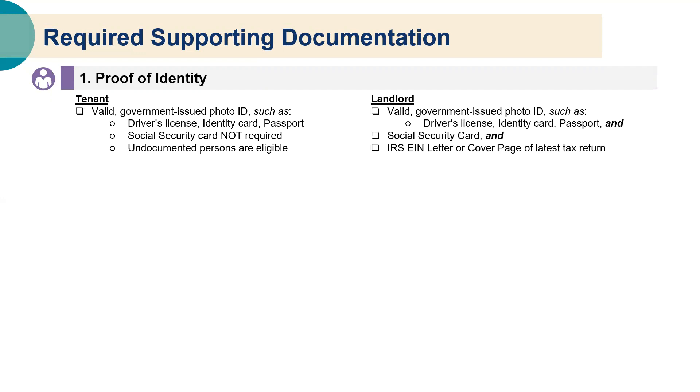First, proof of identity. A tenant must provide a valid government-issued photo ID such as a driver's license, identity card, or passport. A social security card is not required for the tenant and undocumented persons are eligible to apply. Landlords must also provide a valid government-issued photo ID, a social security card, and their IRS EIN letter or cover page of the latest tax return.